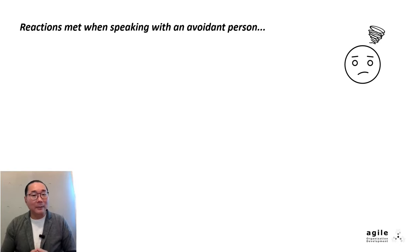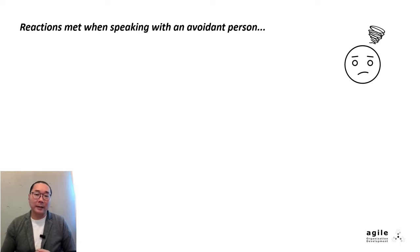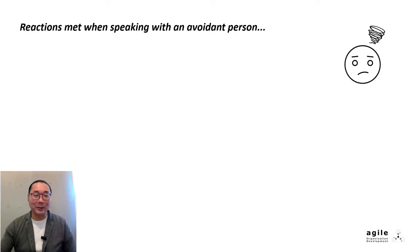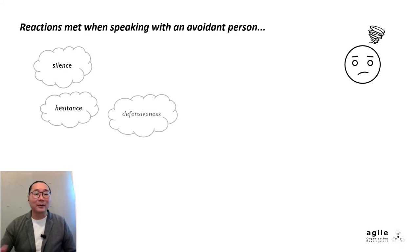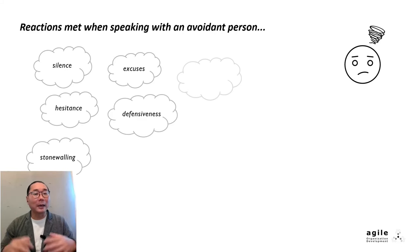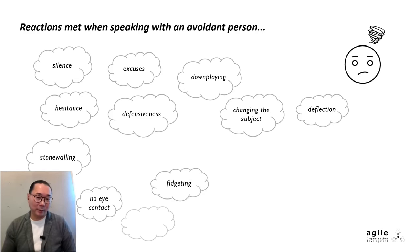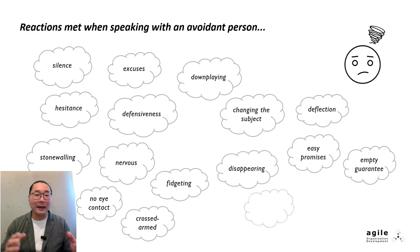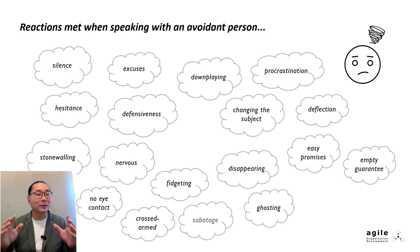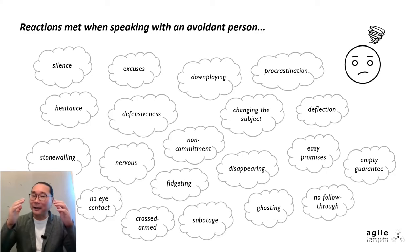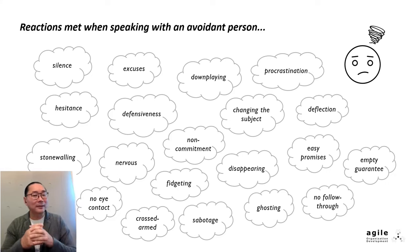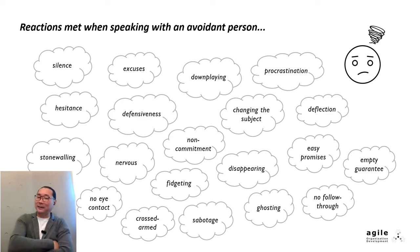The question I began with was: what are some typical reactions we encounter when speaking with an avoidant person? Here's what I found. We encounter nonverbal cues — silence, hesitance, stonewalling, lack of eye contact, nervousness like fidgeting and crossed arms, and defensiveness.